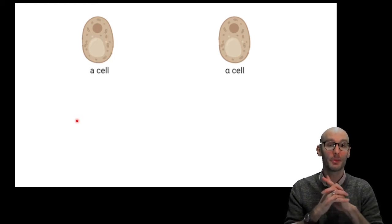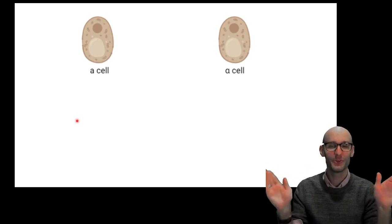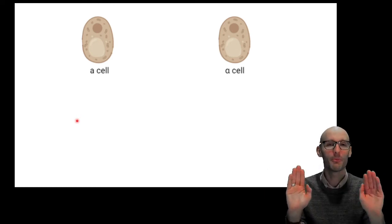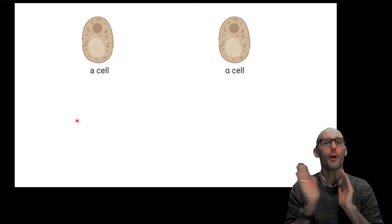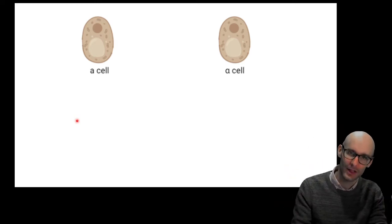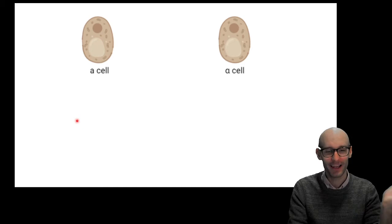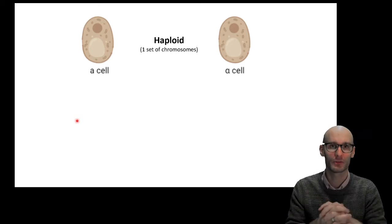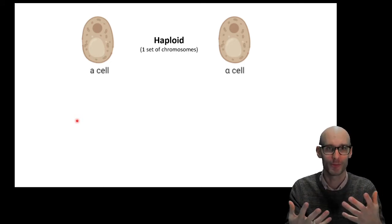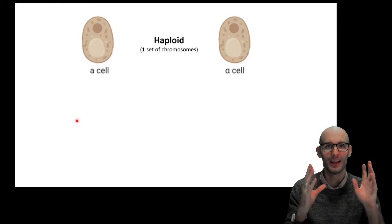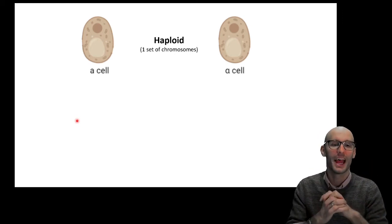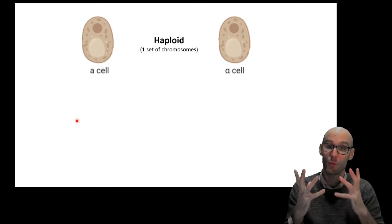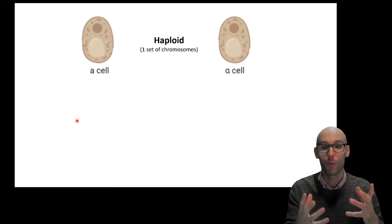So yeast predominantly lives in these two cell forms. One is called the A cell, and one is called the alpha cell. Why not alpha and beta? I don't know. But anyway, these are haploid cells, which means they only have one set of chromosomes. The human body, everywhere except for your gamete production zones, contains two sets of chromosomes. So this is kind of unusual. They live a lot as haploid, one set of chromosome cells.